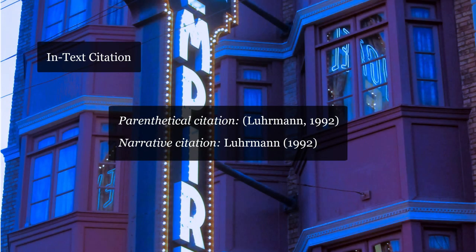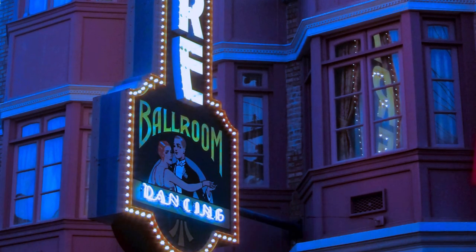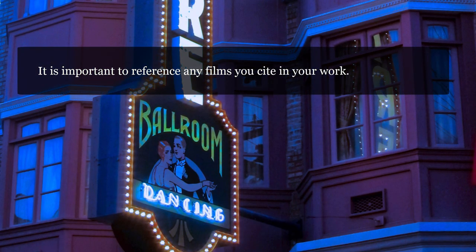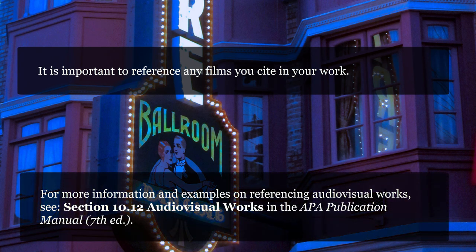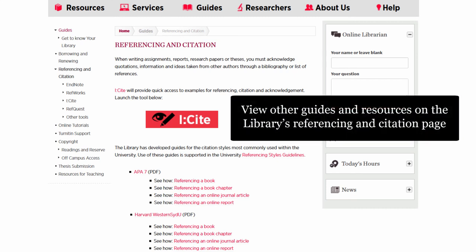Here is how it would look as an in-text citation with the director and the year. It is important to reference any films you cite in your work. For more information and examples on referencing audiovisual works, see section 10.12 Audiovisual works in the APA Publication Manual 7th Edition. View other guides and resources on the library's referencing and citation page.